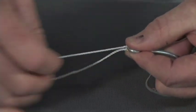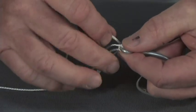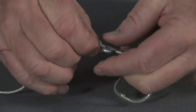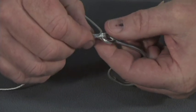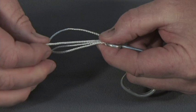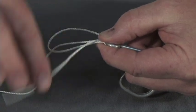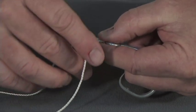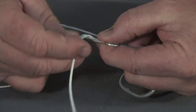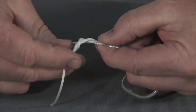Then what you want to do is form an overhand loop, and you can hold all of this with your thumb, take the tag end of your line, come through the loop and over the main line, four or five times, or six times.